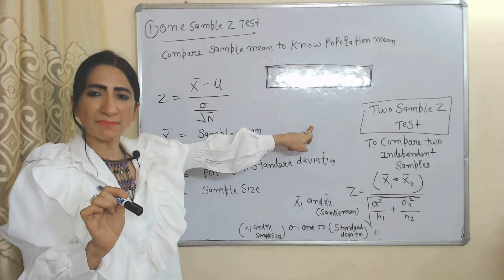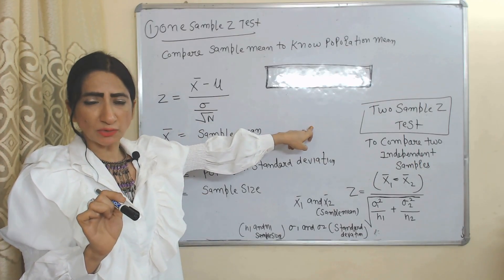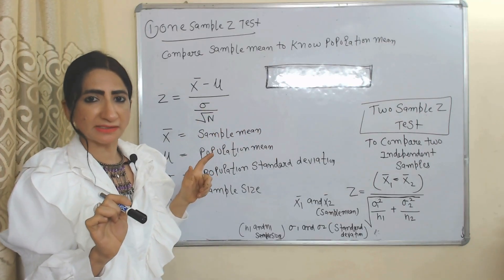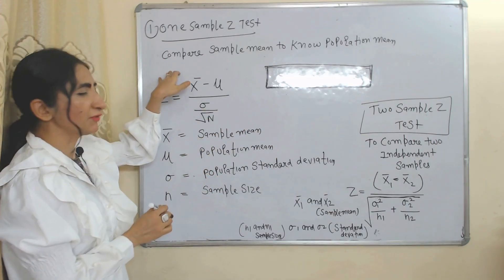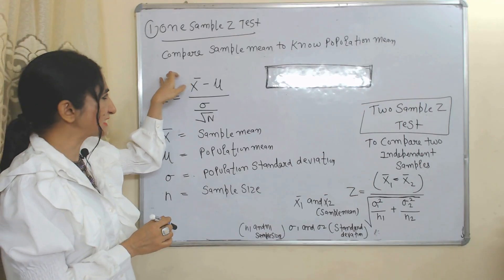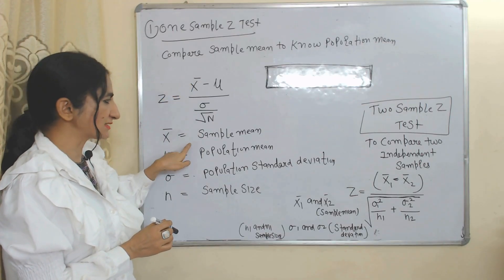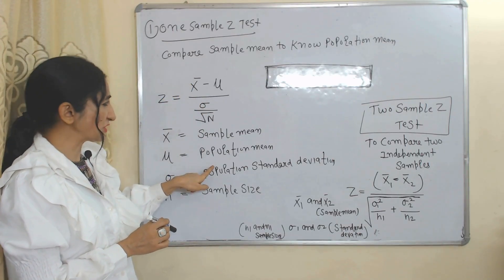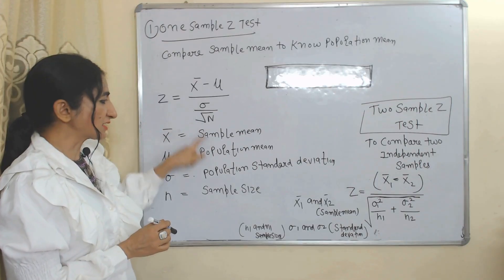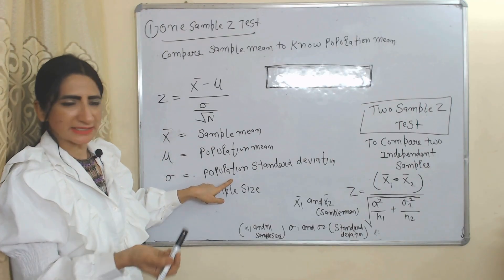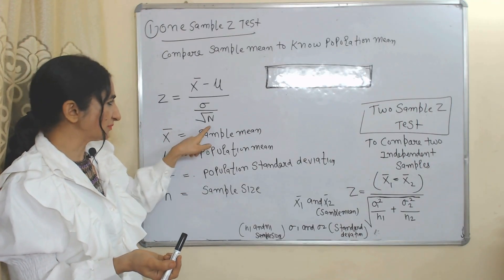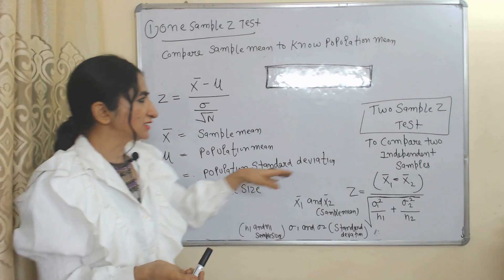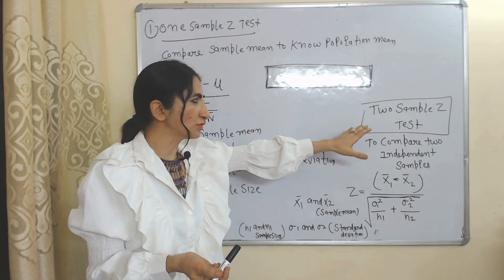Z test is mainly divided into two parts: one-sample Z test and two-sample Z test. One-sample Z test is used to compare sample mean to a known population mean. Two-sample Z test is used to compare two independent samples. The formula of one-sample Z test uses x̄ (sample mean), μ (population mean), σ (population standard deviation), and n (sample size).